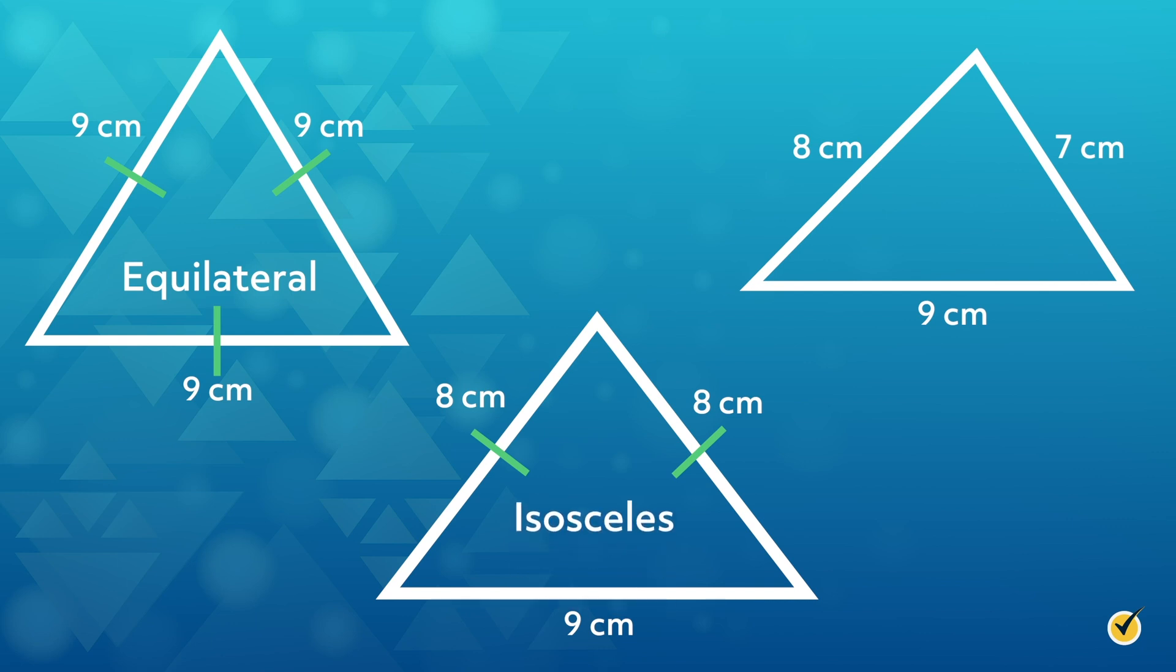It's a hard one to spell, but an easy one to recognize. In our last triangle, none of the sides have the same length, so this is called a scalene triangle.